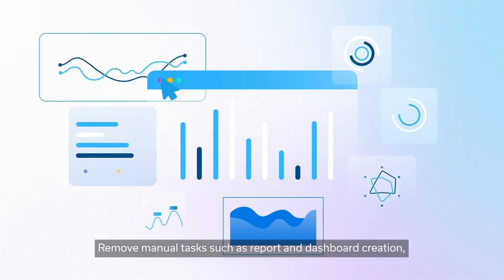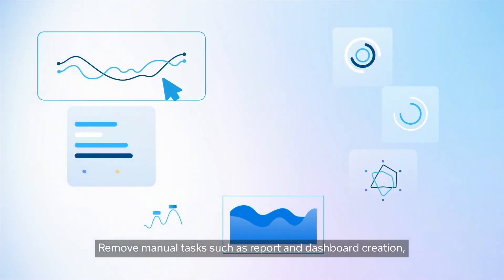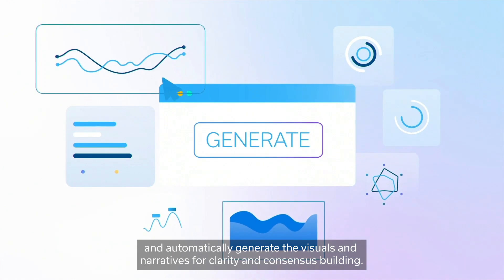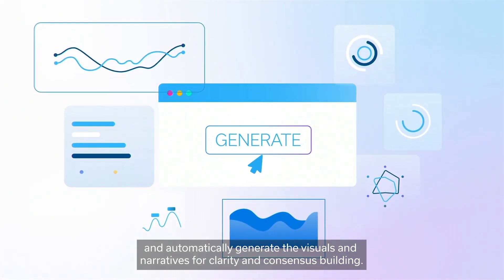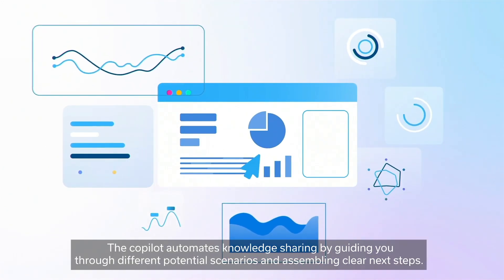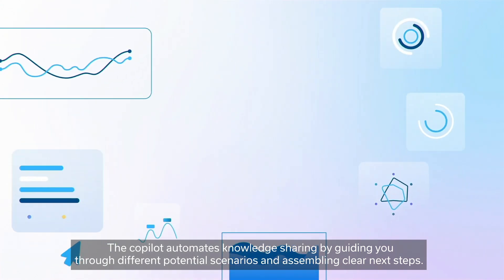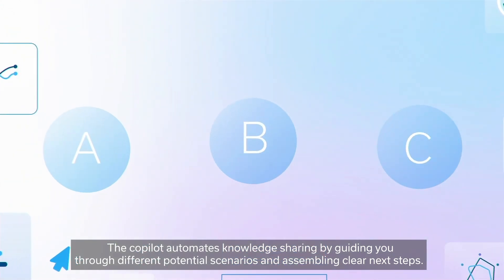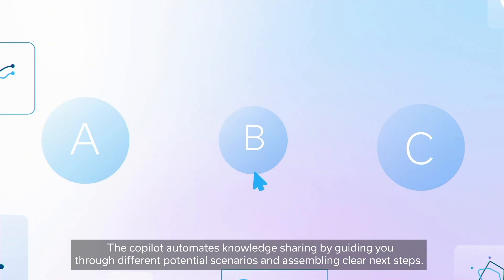Remove manual tasks such as report and dashboard creation and automatically generate the visuals and narratives for clarity and consensus building. The Category Manager Copilot automates knowledge sharing by guiding you through different potential scenarios and assembling clear next steps.